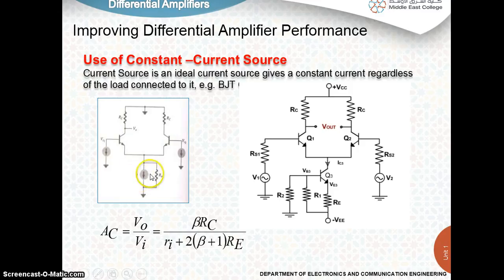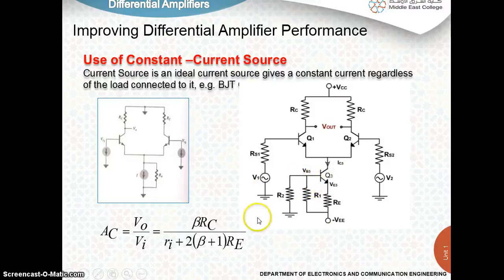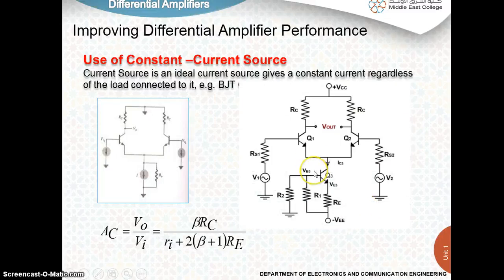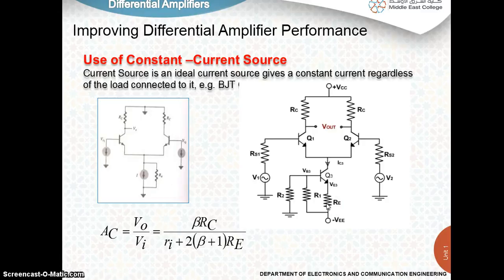All of you must have a good idea about what a current source is. This is an ideal one, and for practical cases, we have to use some extra components to generate this current source. Here, the constant current source is achieved by transistor Q3, along with bias resistances R1, R2, and emitter resistance Re.